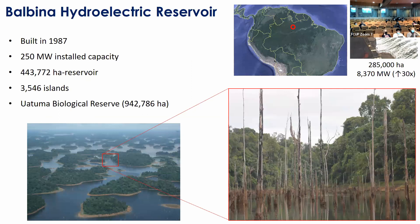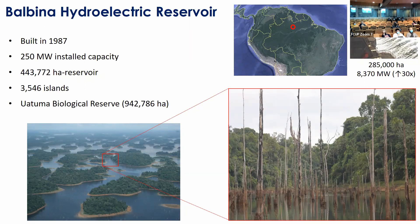I'll start talking about the Balbina hydroelectric reservoir, created a bit more than 30 years ago and where I've been working for a long time. This can be considered an environmental disaster. Balbina has an installed capacity of only 250 megawatts, yet the reservoir is larger than 400,000 hectares. By comparison, the Tucuruí dam, also in the Brazilian Amazon, produces more than 30 times the energy of Balbina with a smaller reservoir. There are more than 3,500 islands of different sizes and degrees of isolation.